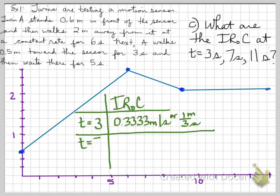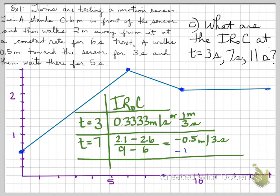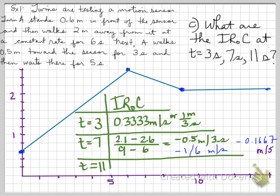At t = 7 seconds, we calculate the instantaneous rate of change: subtracting the values gives 0.5 meters for every 3 seconds, which mathematically means one-sixth of a meter per second, or approximately negative 0.1667 meters per second. At t = 11 seconds, looking at the graph, we're on the horizontal line — a horizontal line means zero slope. So the object is at rest, traveling zero meters per second.